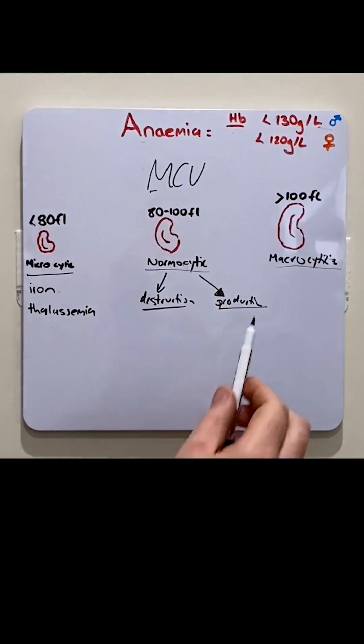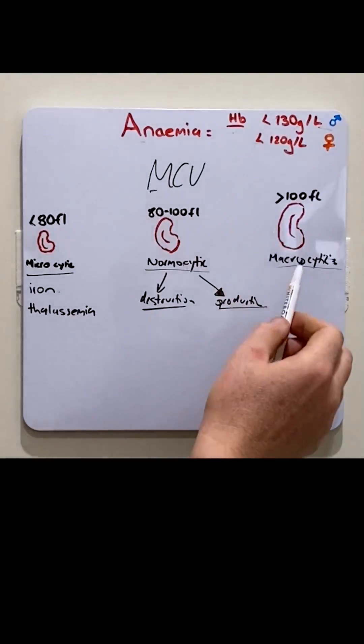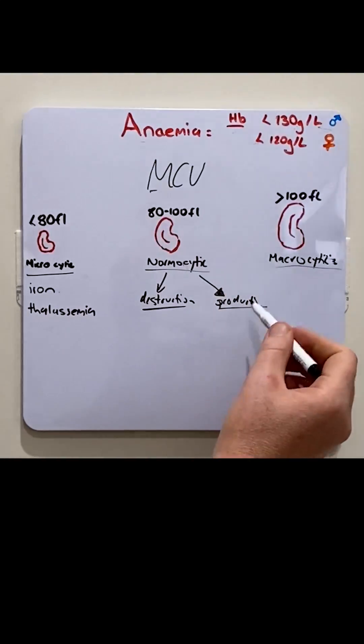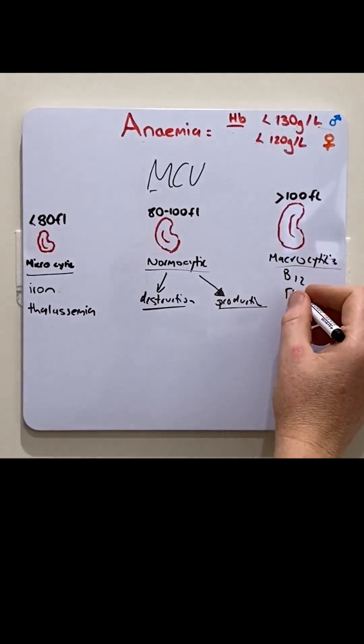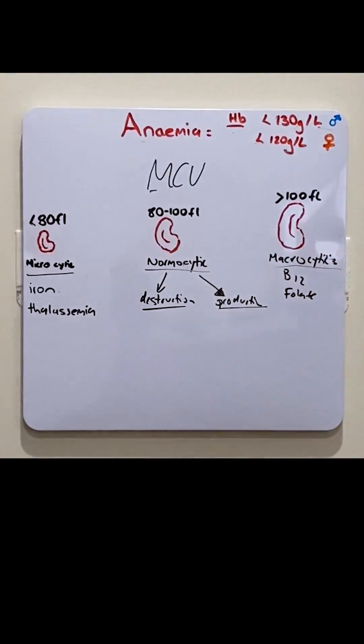For macrocytic anemias, there's a problem with red blood cells maturing. Two common subtypes are B12 or folate deficiency, which are important constituents for allowing red blood cells to mature.